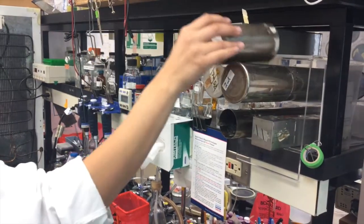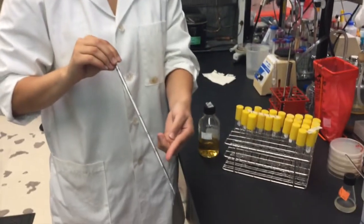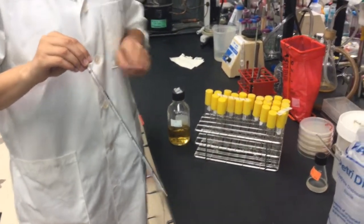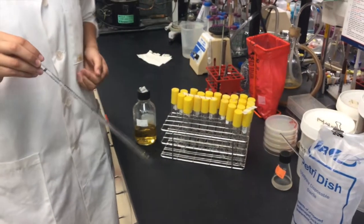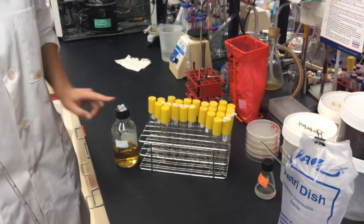We will use a sterile pipette to transfer the broth. A pipette is an instrument that transfers a specific amount of liquid from one container to another. Today, we will be transferring LB from the jar into the glass tubes.